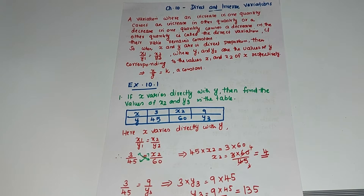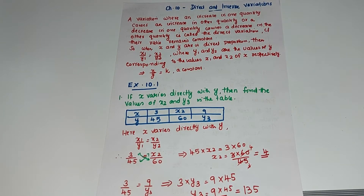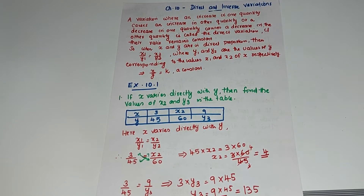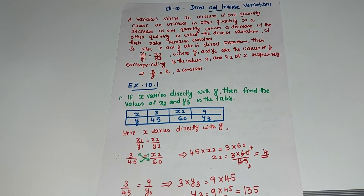When x and y are in direct proportion — also called direct proportion — the formula is x1 by y1 equals x2 by y2, where y1 and y2 are the values of y corresponding to x1 and x2 respectively. This means x by y is a constant. So in direct variation, we use x1 by y1 equal to x2 by y2.